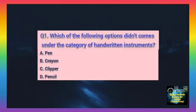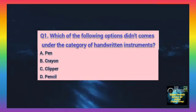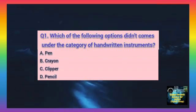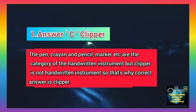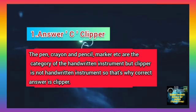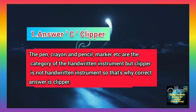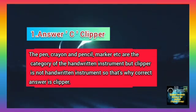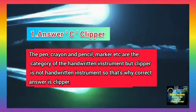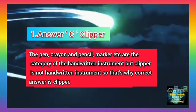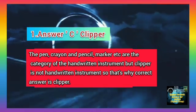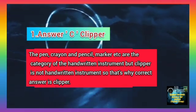Question number 1. Which of the following options does not come under the category of handwritten instruments? Option A: Pen. Option B: Crayon. Option C: Clipper. Option D: Pencil. The correct answer is C, Clipper. Pen, crayon, pencil, and marker are all categories of handwritten instruments, but a clipper is not a handwritten instrument.